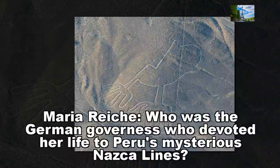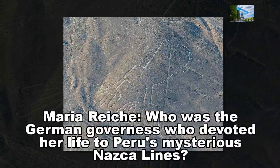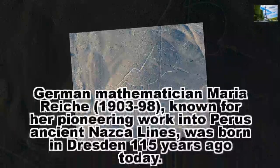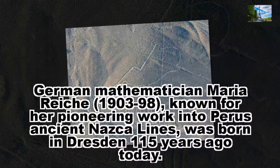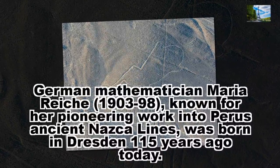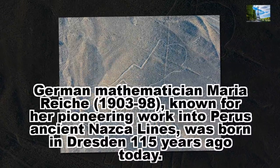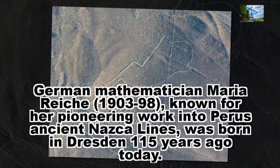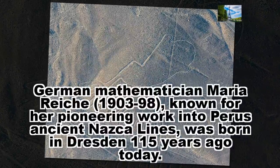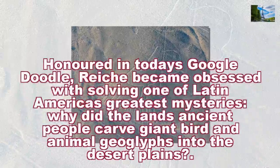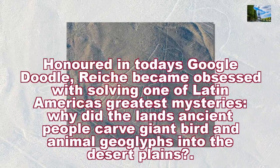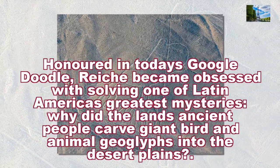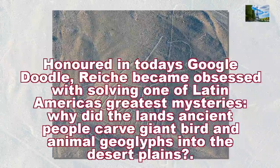Maria Reiche, the German governess who devoted her life to Peru's mysterious Nazca Lines. German mathematician Maria Reiche, known for her pioneering work into Peru's ancient Nazca Lines, was born in Dresden 115 years ago today. Honoured in today's Google Doodle, Reiche became obsessed with solving one of Latin America's greatest mysteries: why did the land's ancient people carve giant bird and animal geoglyphs into the desert plains.